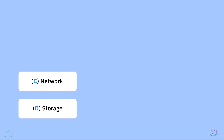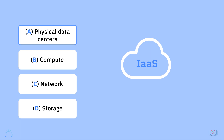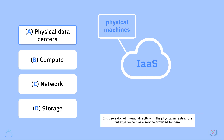Let's look at the key components of cloud infrastructure. Physical data centers: IaaS providers manage large data centers that contain the physical machines required to power the various layers of abstraction on top of them. In most IaaS models, end users do not interact directly with the physical infrastructure, but experience it as a service provided to them.